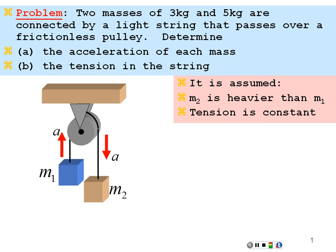It's assumed mass 2 is heavier than mass 1, and the tension is constant. If I make a free body diagram of mass 1, tension is pulling up, its weight M1G is pulling down, and as a result of all these external forces acting on mass 1, it manages to accelerate upward with some value A. Those are all the external forces acting on mass 1, and the resultant acceleration is in the upward direction.